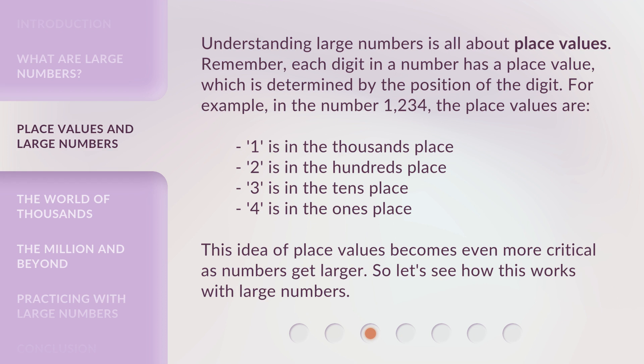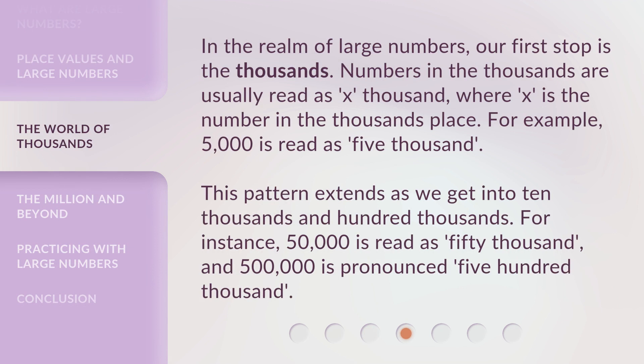This idea of place values becomes even more critical as numbers get larger. In the realm of large numbers, our first stop is the thousands. Numbers in the thousands are usually read as 'x thousand,' where x is the number in the thousands place. For example, 5,000 is read as 'five thousand.' This pattern extends into the 10,000s and 100,000s — for instance, 50,000 is read as 'fifty thousand,' and 500,000 is pronounced 'five hundred thousand.'